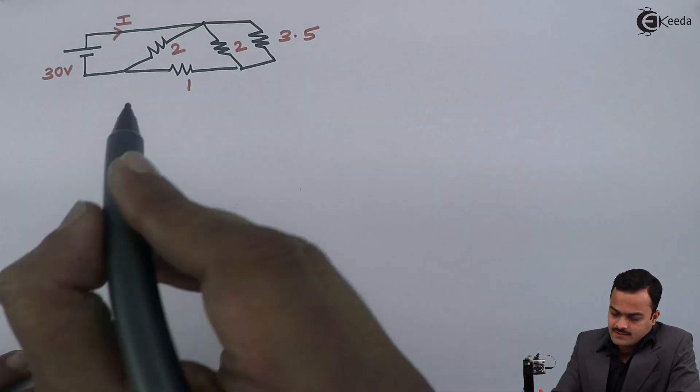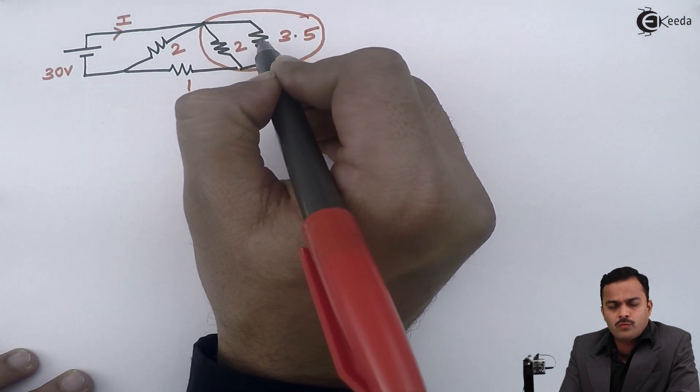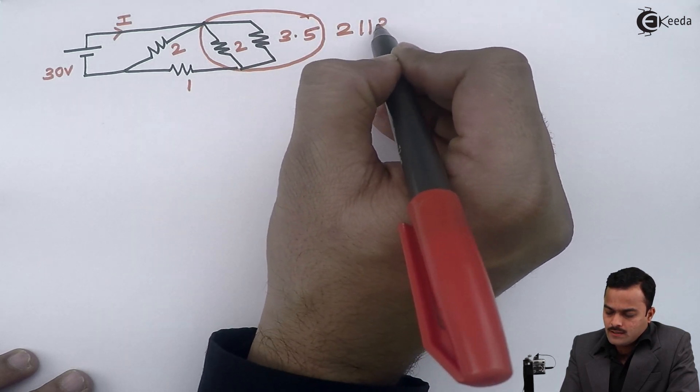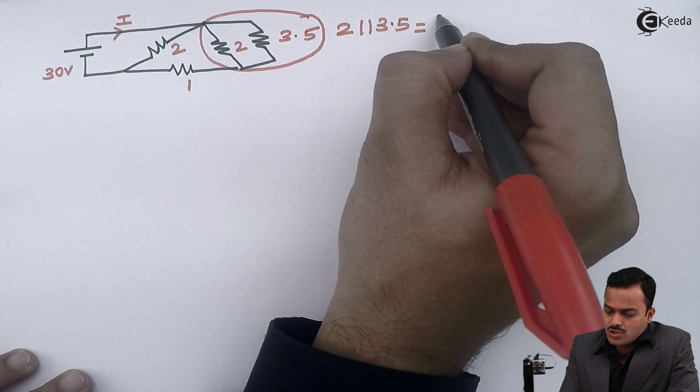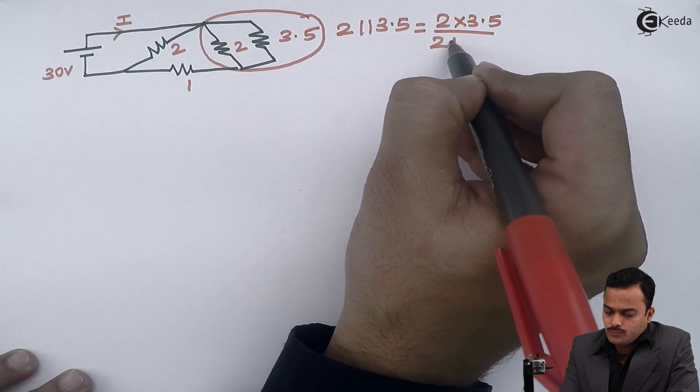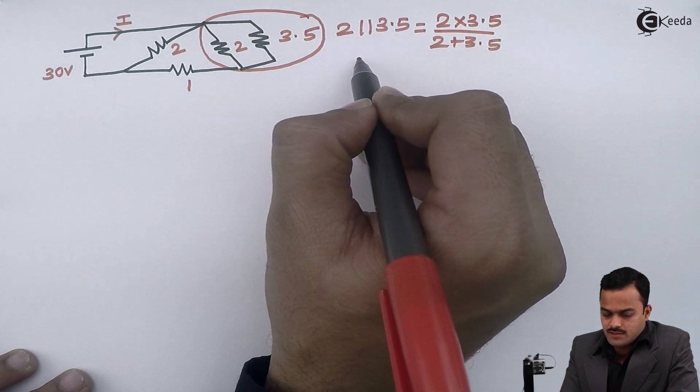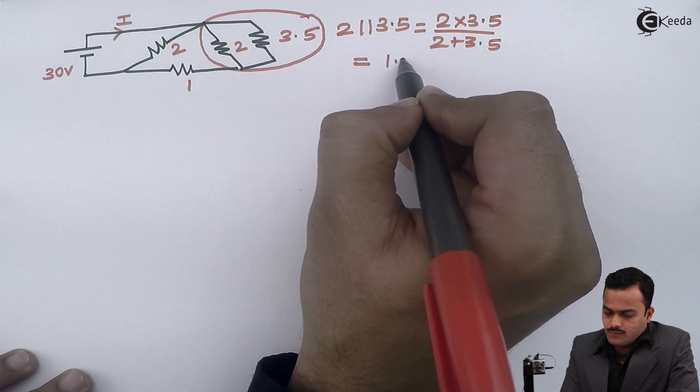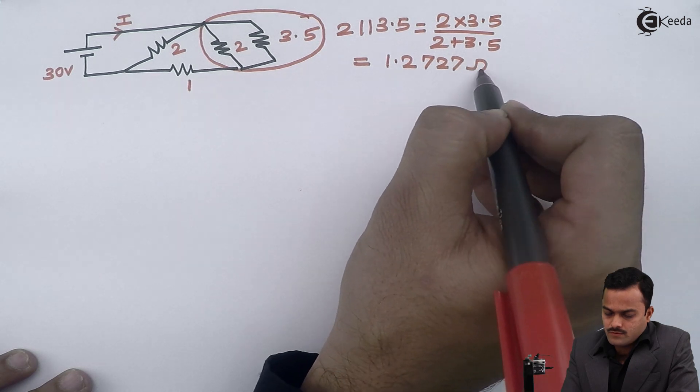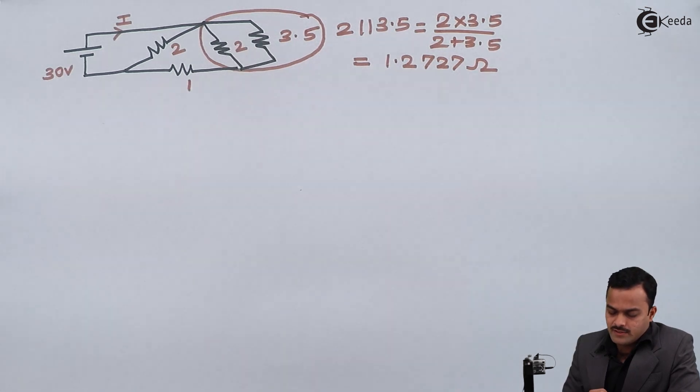Now I can check this 2 and this 3.5 forming a closed loop. So without thinking I can say 2 parallel 3.5, and if you solve 2 into 3.5 divided by 2 plus 3.5, after solving this you will get an answer of 1.2727 ohm.